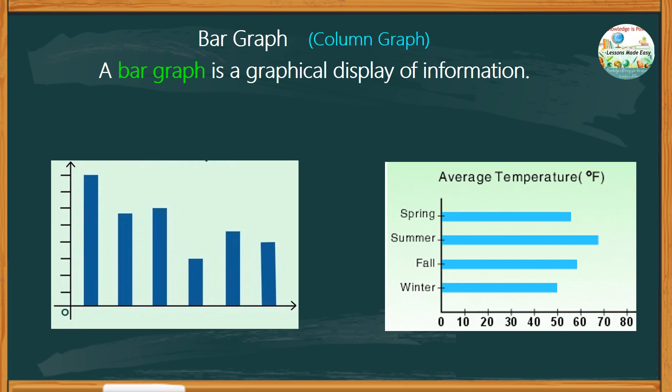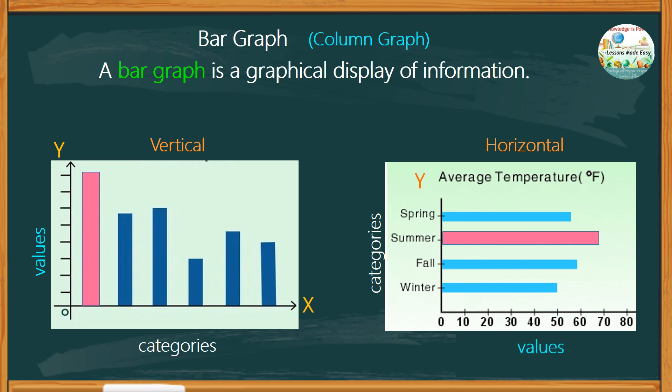Bar graphs can be created with vertical bars or horizontal bars that compare values in a category. Below are examples of bar graphs. In vertical bars, the values are written on the y-axis and the categories on the x-axis. While in horizontal bars, the categories are written on the y-axis and the values on the x-axis.